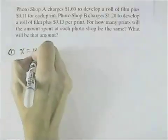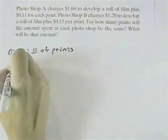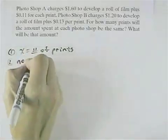Let's say X is the number of prints. Step 2 is to identify any other variables in terms of X, which we don't have any other variables now, so that would be none.